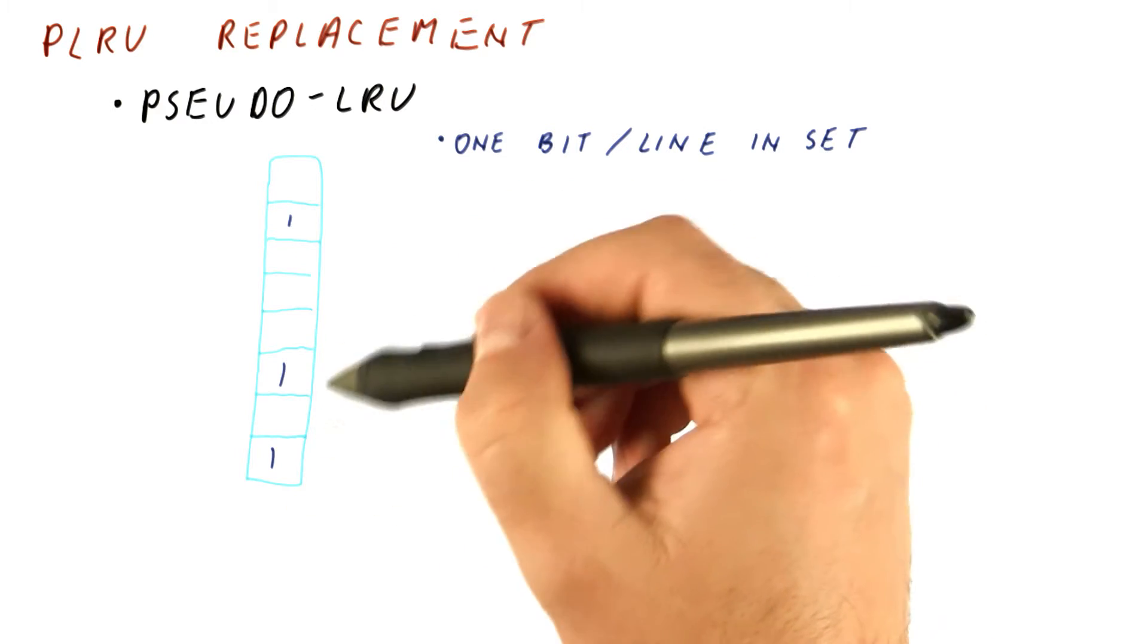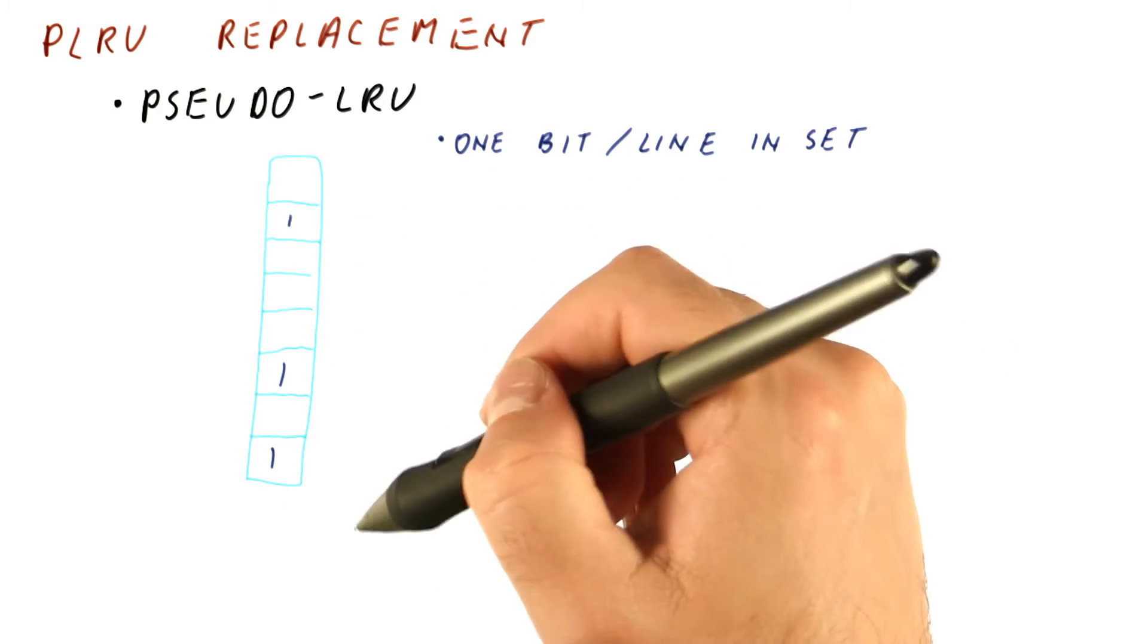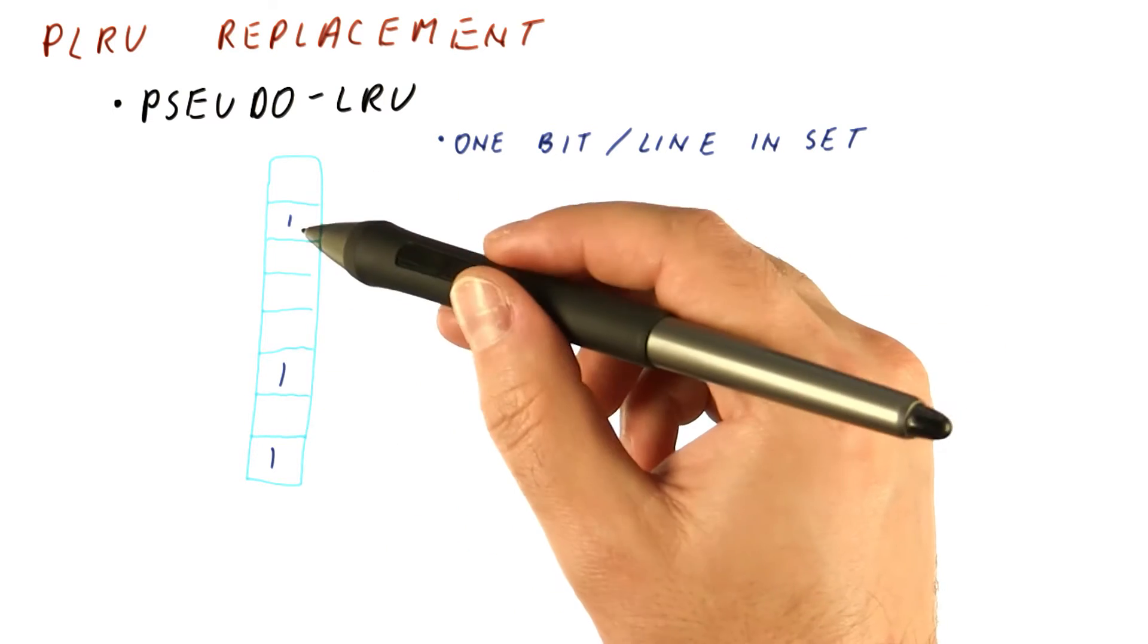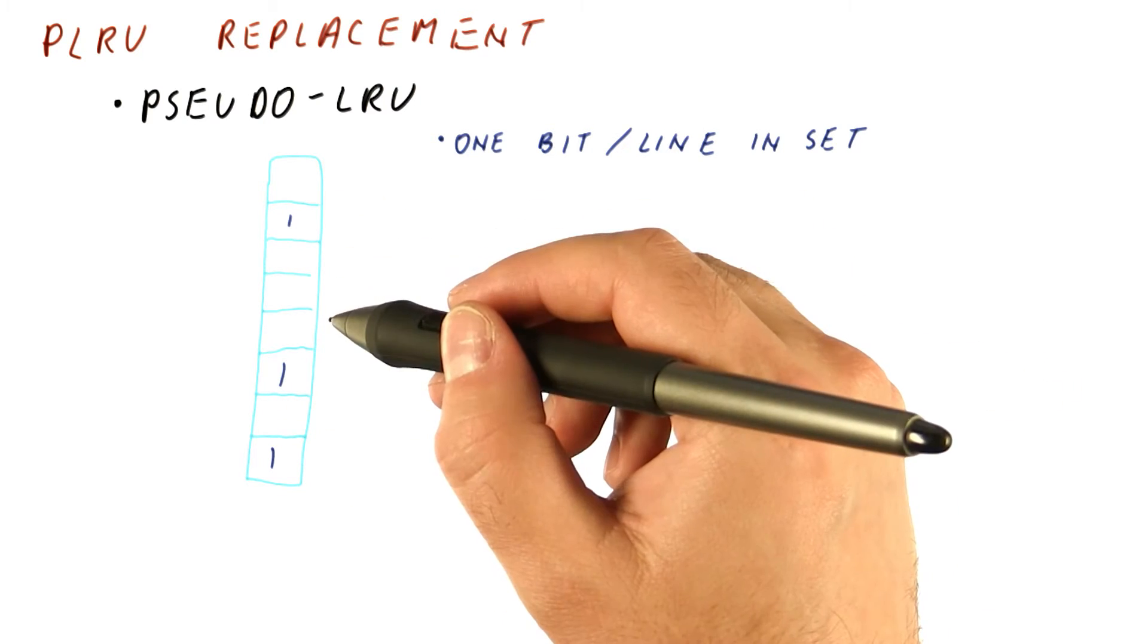As long as there is at least one zero bit here, we keep doing this. If we ever need to replace something, we pick among the blocks whose bits are zero. All the recently accessed blocks will have the bits at one, and thus be saved from replacement.